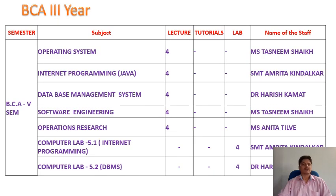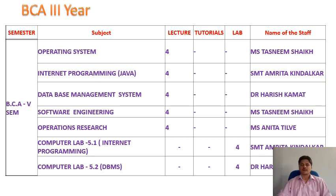Now, looking into the final year fifth semester subject and teacher allotment. The final year fifth semester students are going to study: operating system, internet programming (which we call Java), database management system, software engineering, operations research, and two labs based on internet programming and DBMS. Here are the respective staff who are going to handle the respective subjects.